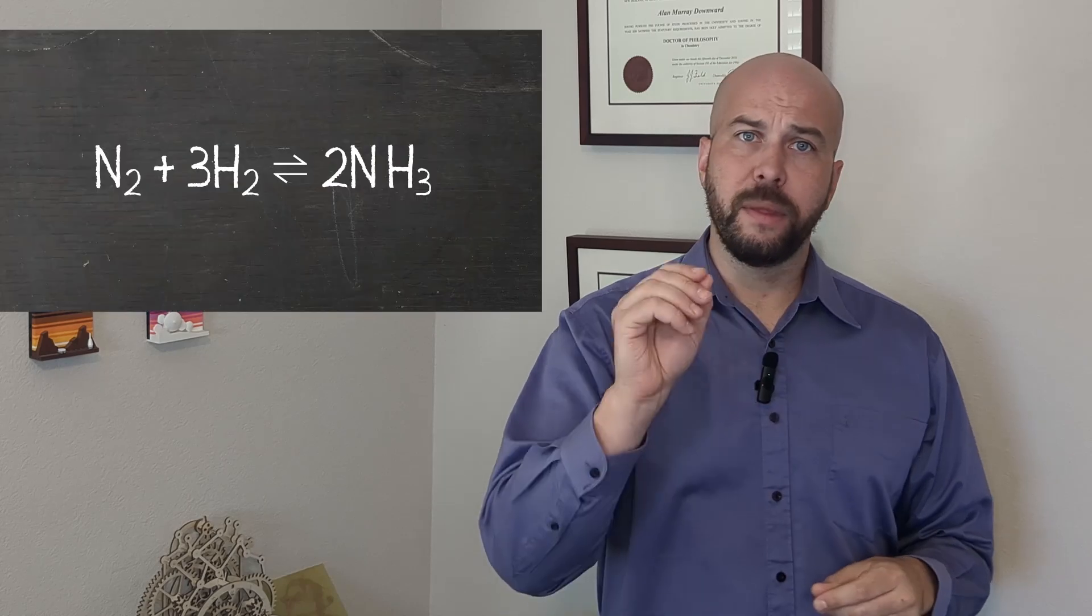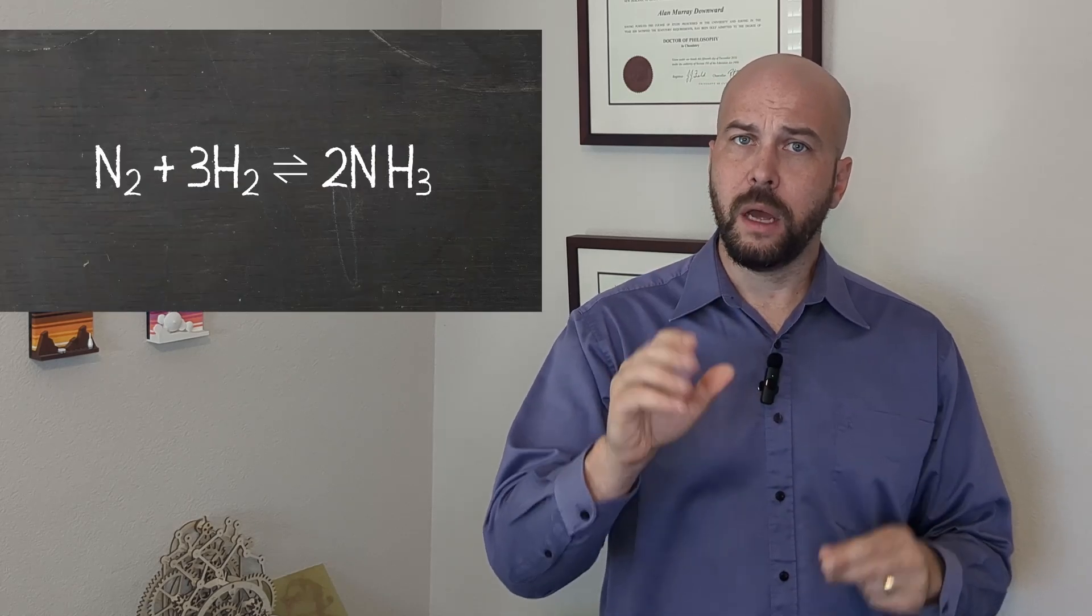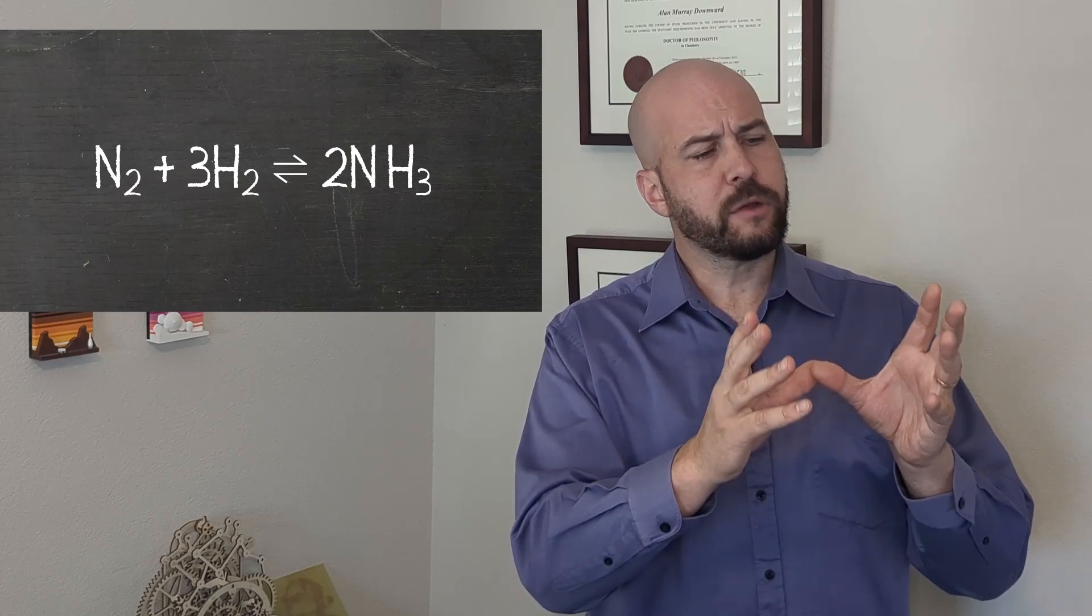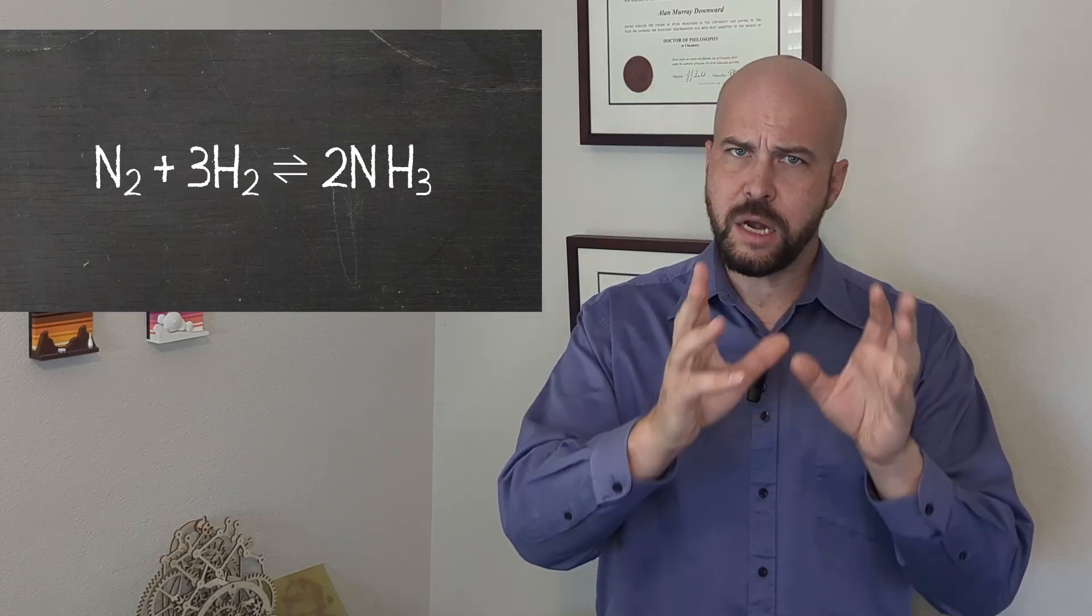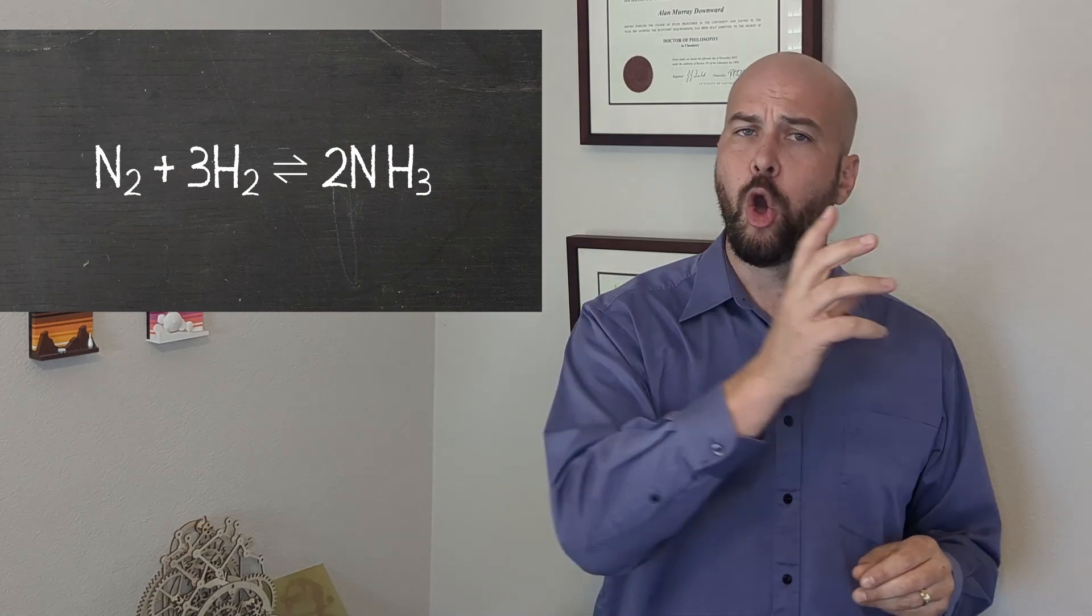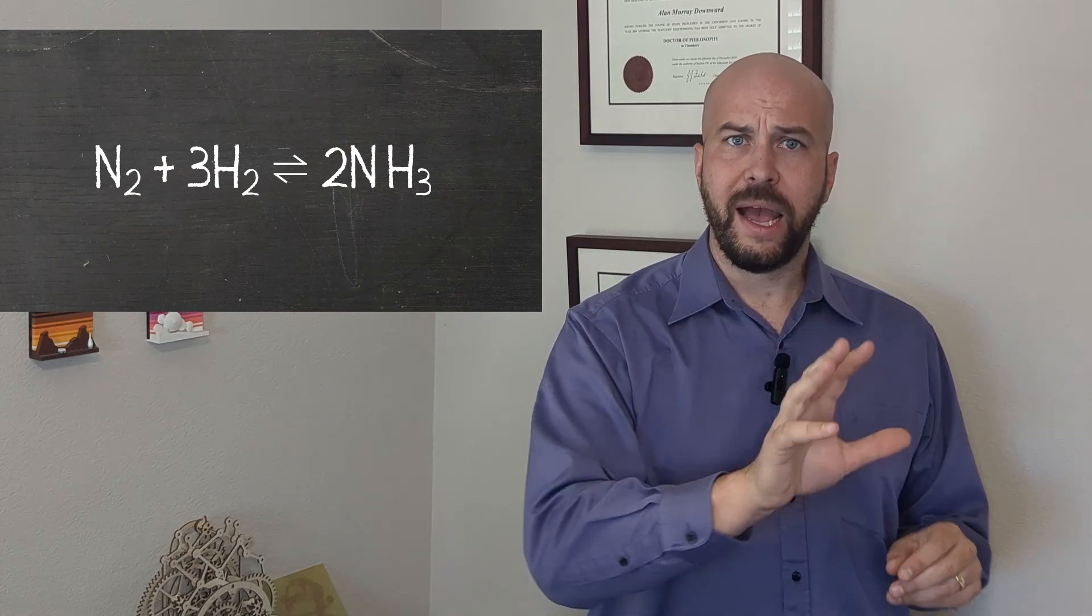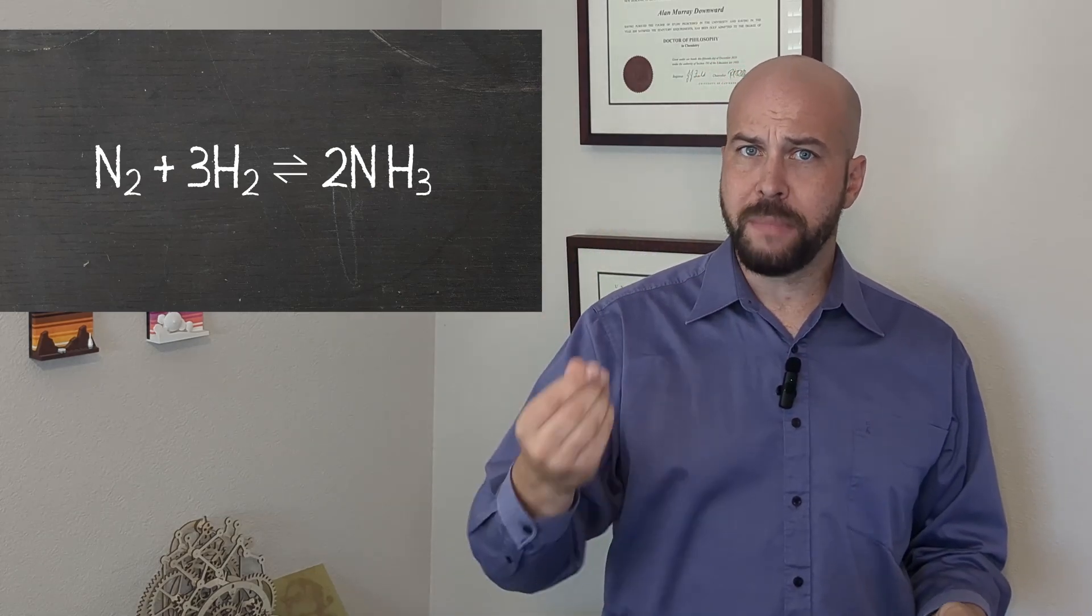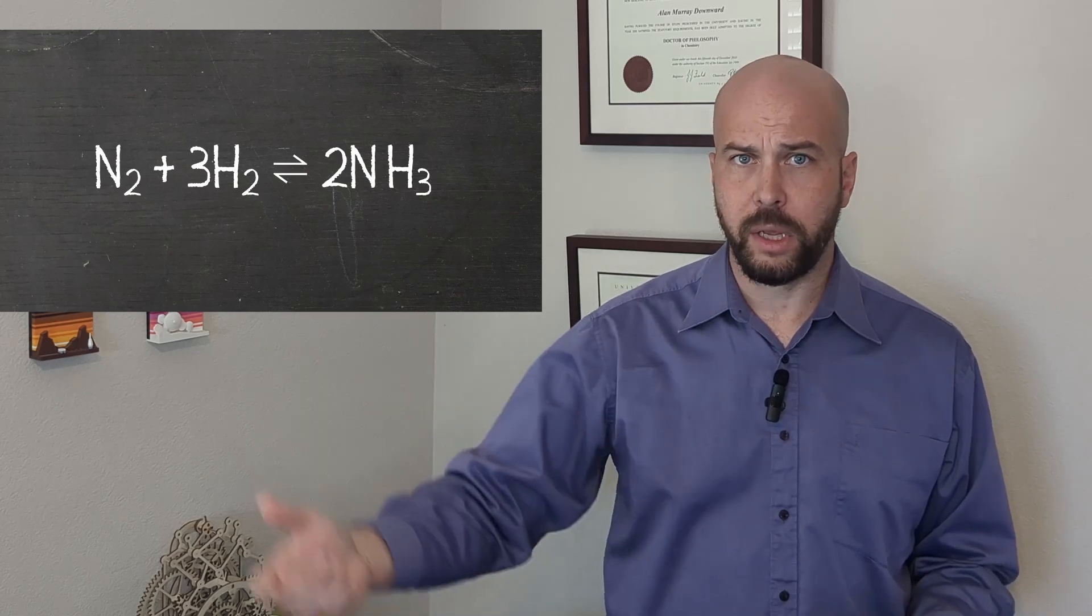In the Haber process, the main industrial method by which ammonia is made, the equilibrium for the reaction of hydrogen and nitrogen to form ammonia lies heavily in favor of the reactants. It is only through clever reactor design that we are able to produce meaningful amounts of ammonia.